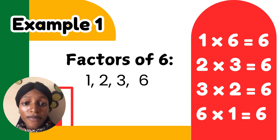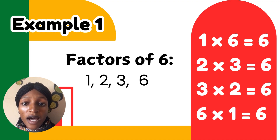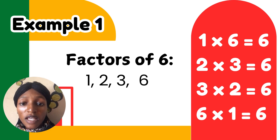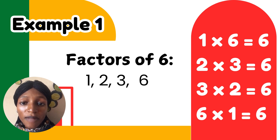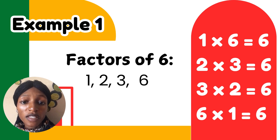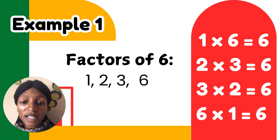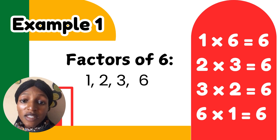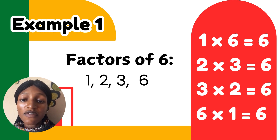Let's look at this example: factors of 6. How can you get the factors of 6? 1 times 6 will give you 6. 2 times 3 will give you 6. 3 times 2 will give you 6. And 6 times 1 will give you 6. Look at the numbers multiplied together to give the answer 6 — those numbers are the factors of 6: 1, 2, 3, and 6 itself. As you can see, 1×6 and 6×1, and 2×3 and 3×2 are the same numbers multiplied in different ways, and they all give you 6.